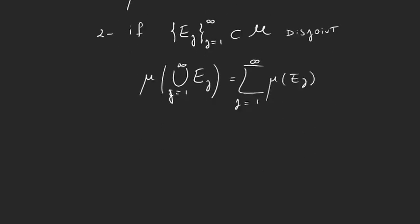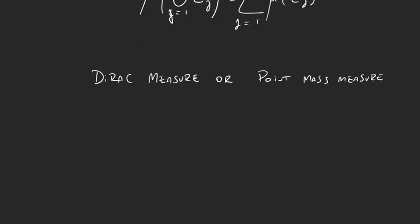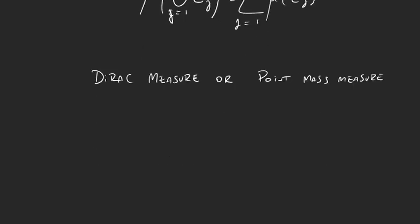And now we're going to work with an example that's called Dirac measure, also called point mass measure. And this measure can be defined on any set X with the sigma algebra M equals parts of X. So the sigma algebra has every subset of X. And what we do is we let x₀ in X, so this x₀ will be just a fixed element.